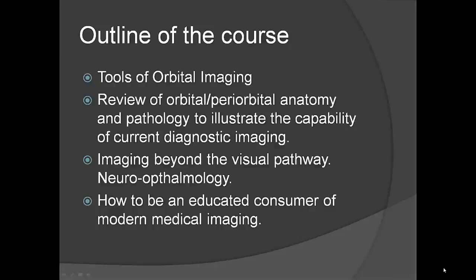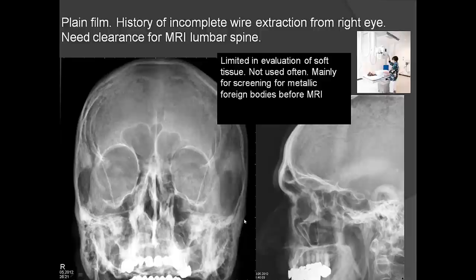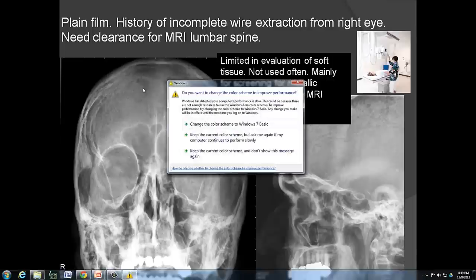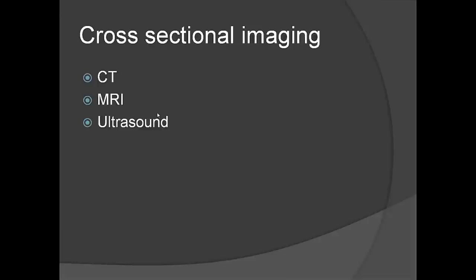I have different modalities for you to order: X-ray, ultrasound, CT scan, MRI, and angiogram. In practice, the main ones are CT scan and MRI. X-ray, also called a plain film, is used primarily to evaluate for foreign bodies before a patient has an MRI, just to be safe — metal in the eye is not safe for these studies. Cross-sectional imaging is what we use every day to evaluate the orbit.